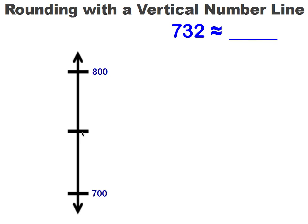Now we need to find the midpoint. What would be halfway between 700 and 800? If you count by tens, 700, 710, 720, 730, 740, 750. 750 would be halfway between 700 and 800.